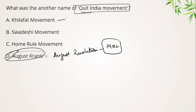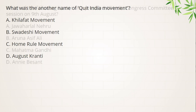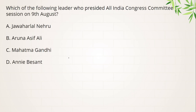Dhyan rakhiye ga — Khilafat Movement ki baat karein to 1919 mein start hui, Swadheshi Movement ki baat karein to 1905 mein start hui, aur Home Rule League Movement ki baat karein to 1916 mein start hui. Next question lete hain.